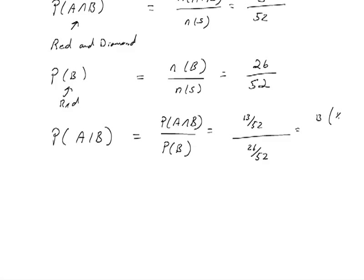13 times 1 over 52 divided by 26 times 1 over 52. We can cancel out the common factors and we get that result, the probability of A given B is 13 out of 26.